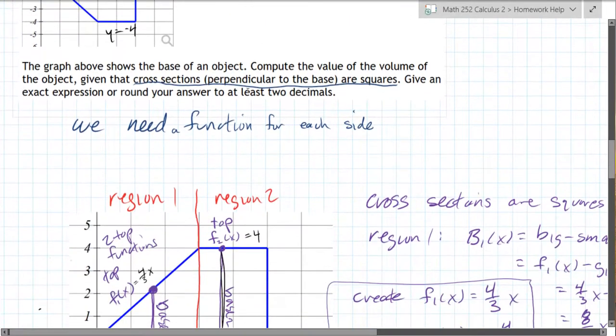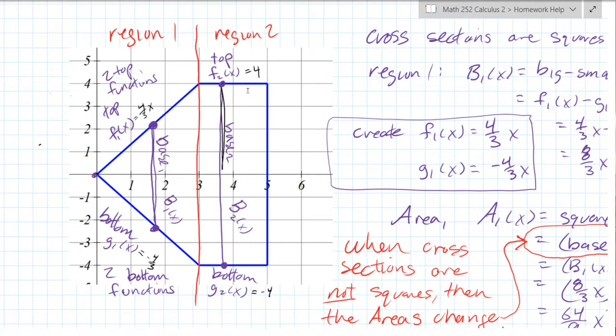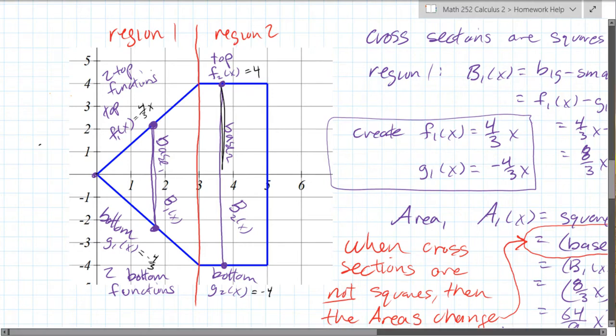So what I did is I redrew, well, I copied and pasted and blew it up, but reproduced the region right here, and we know our cross-sections need to be vertical, so they're drawn right here.